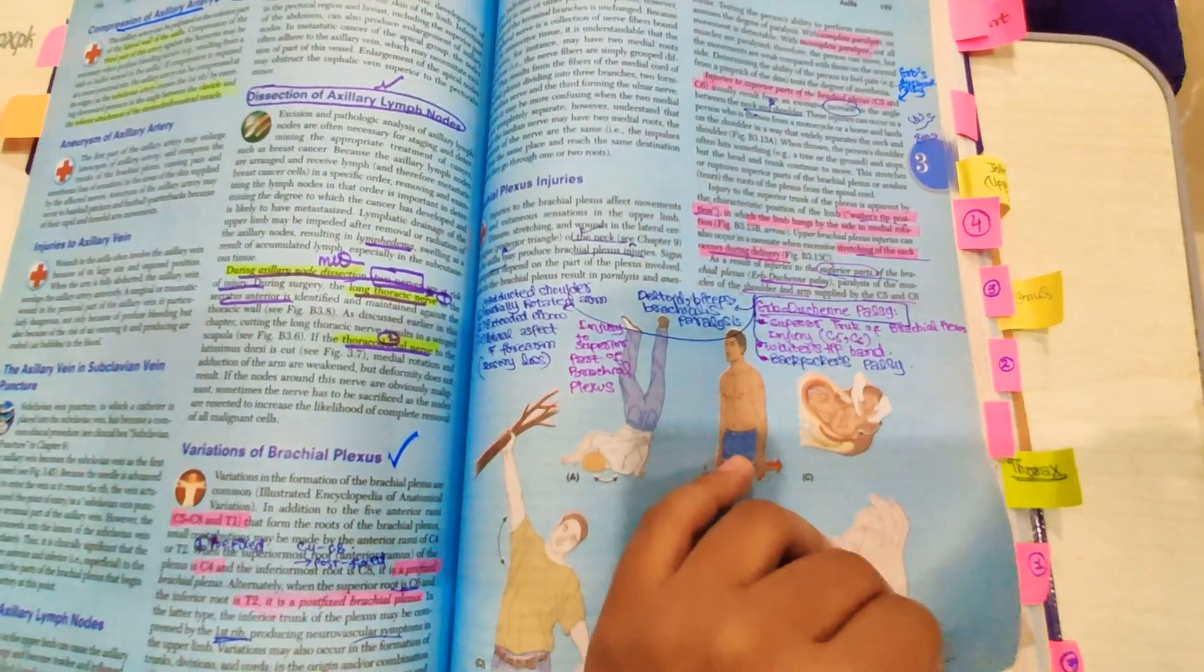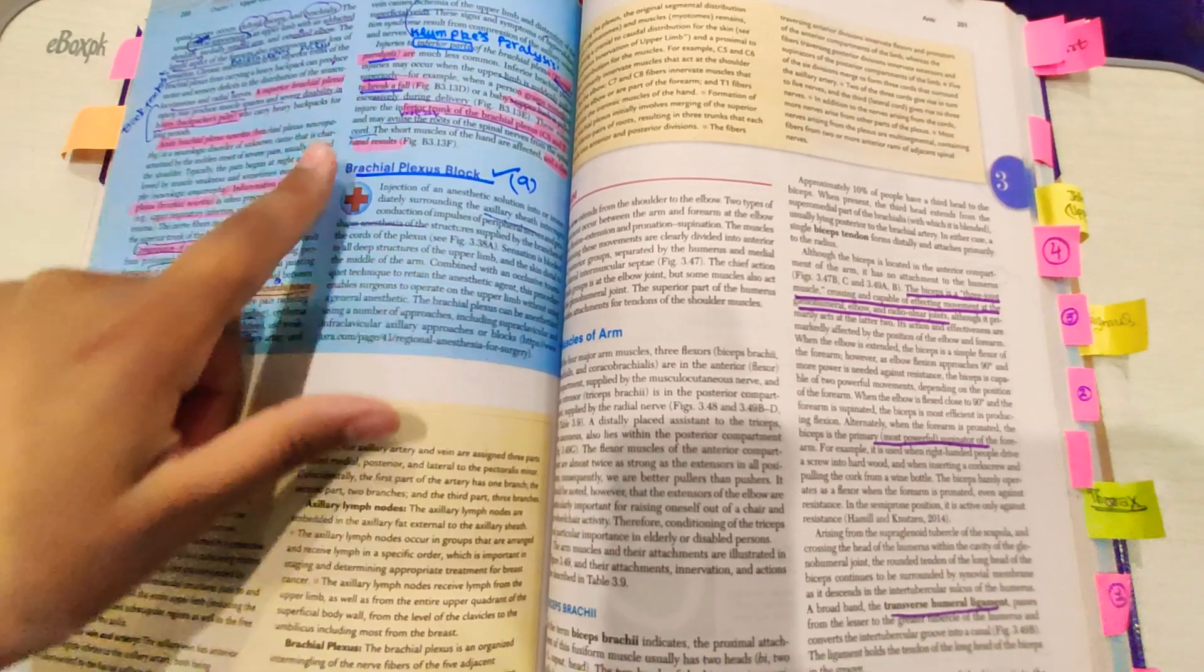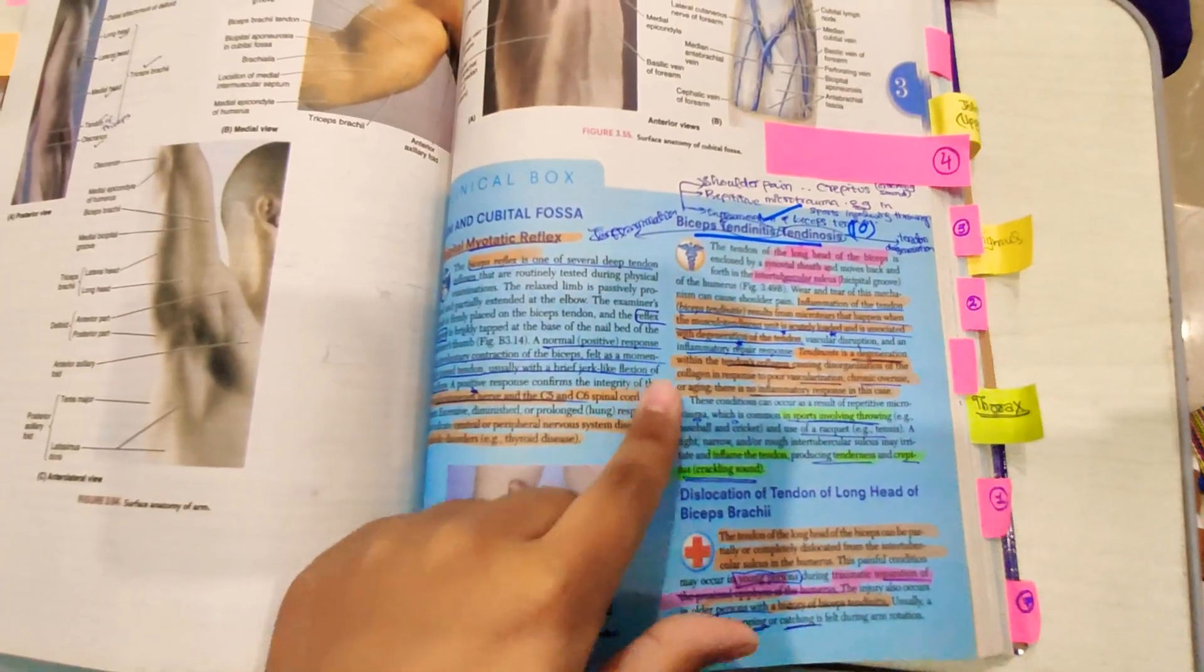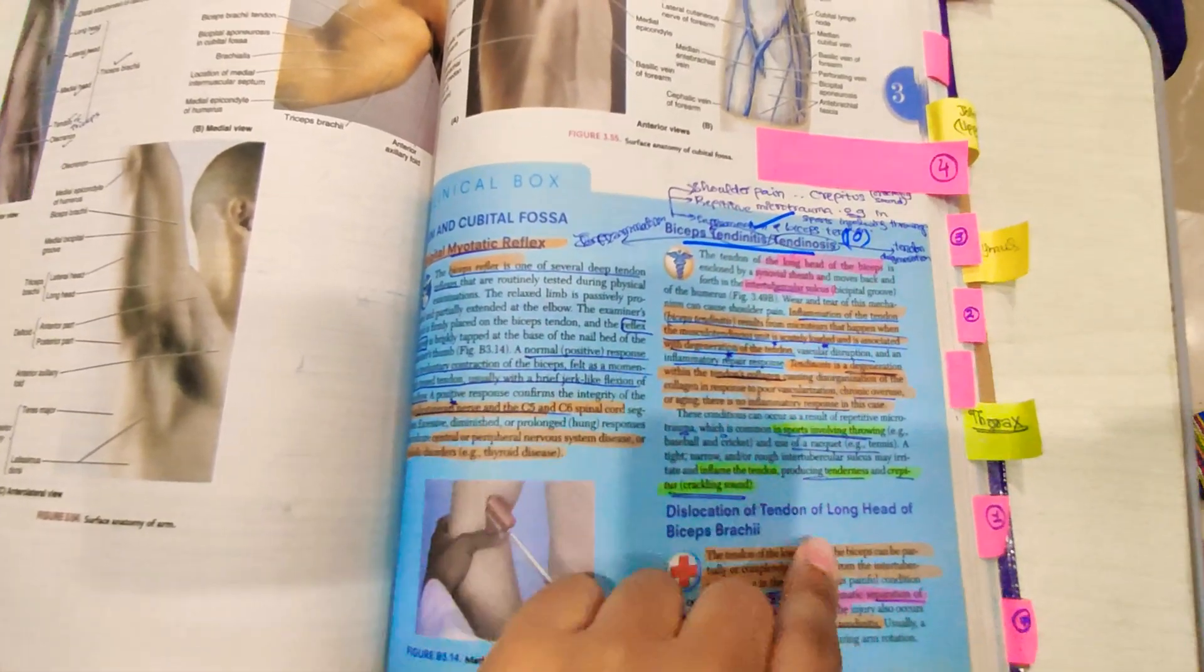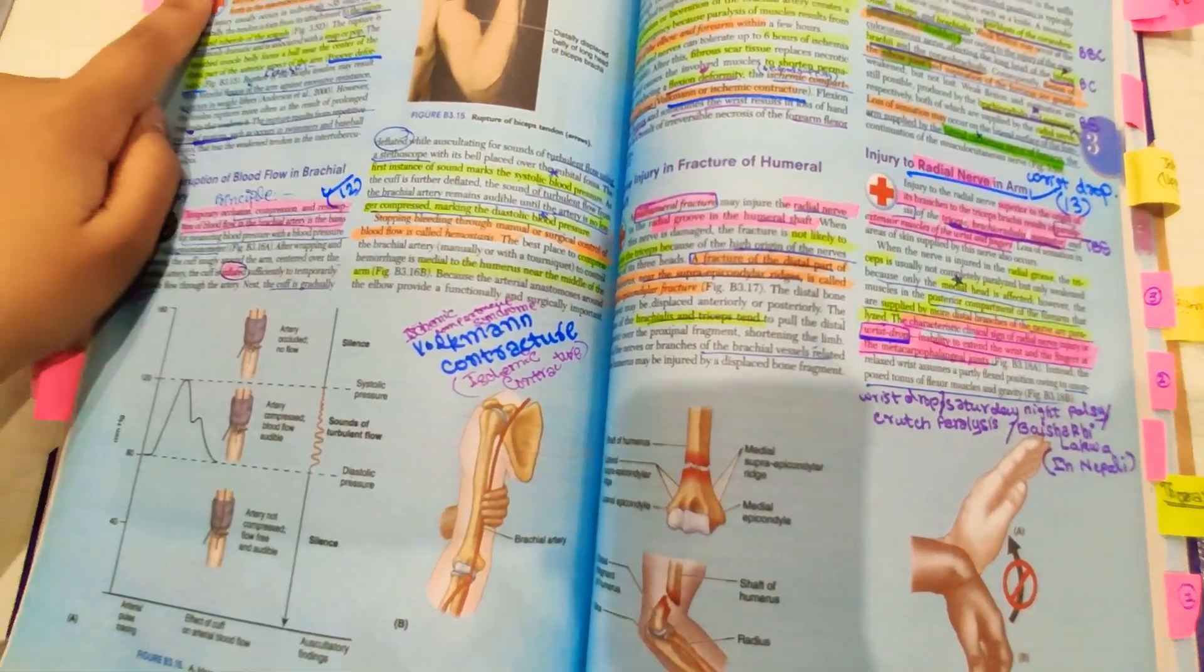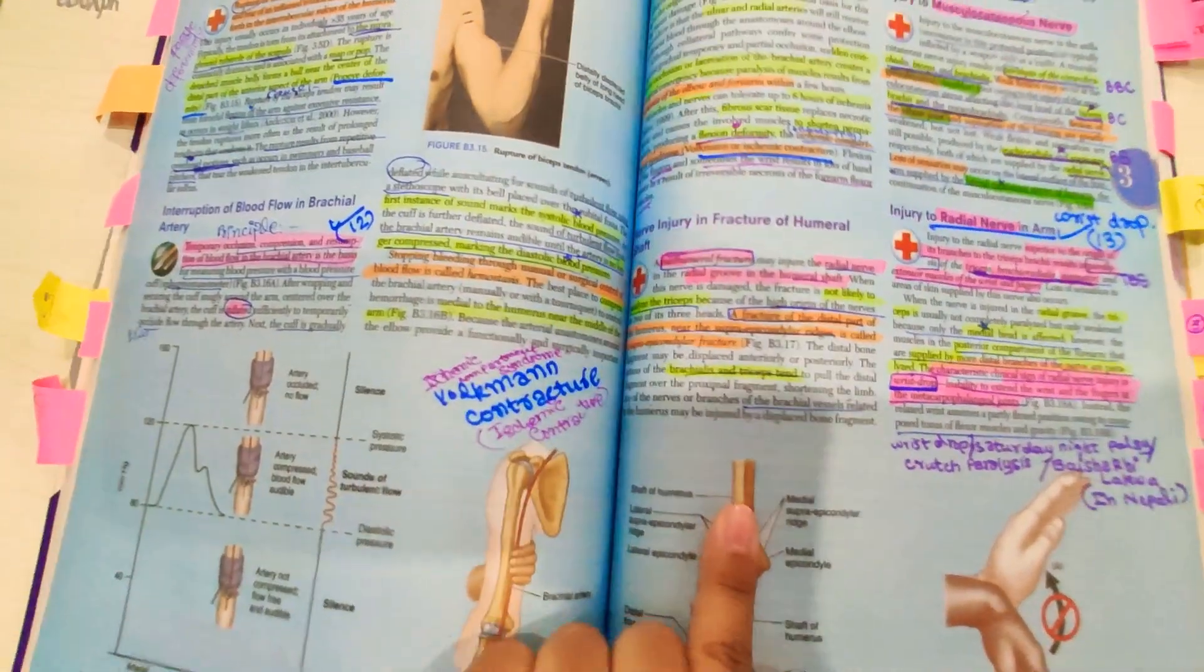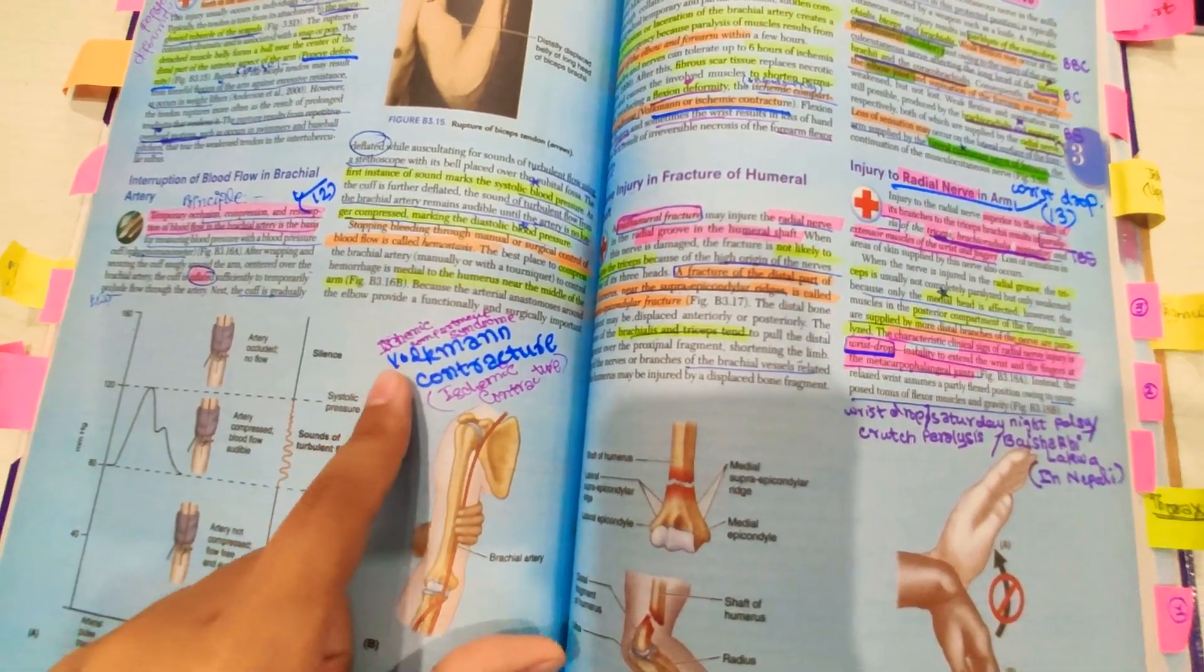Waiter tip position, and then you have to do Klumpke's palsy, brachial plexus, brachial plexus block. Then you have to do biceps tendinitis, tendinosis - it's very important. Then you have to do Popeye's deformity, it's also important. Rupture of tendon of long head of biceps brachii, and then you have to do Volkmann contracture, its other name is ischemic compartment syndrome.